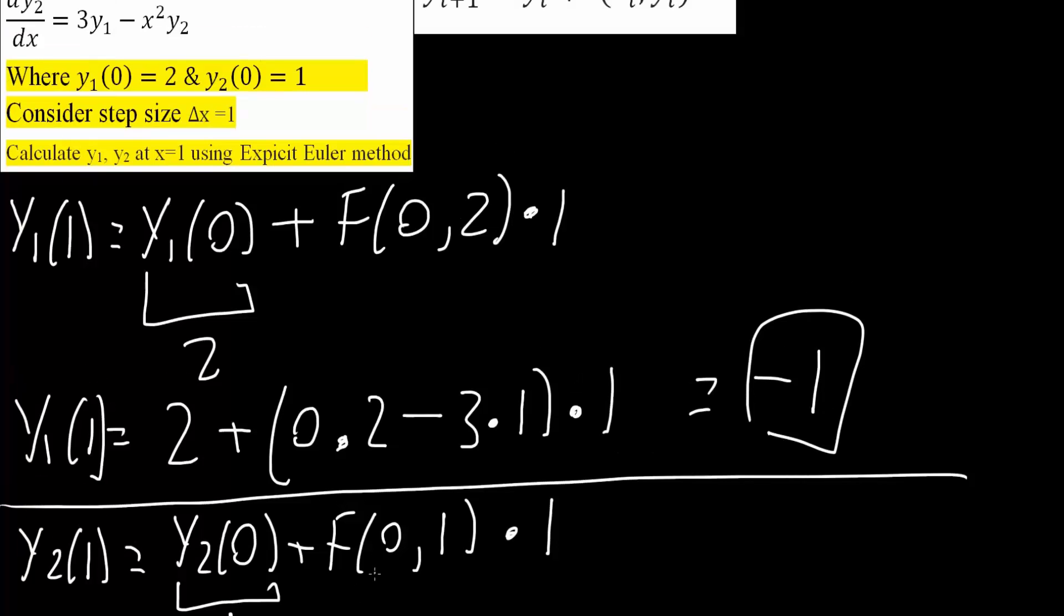So we would get 3 times y1. y1 would be 2, so 3 times 2, minus x squared. x, we said was 0, so 0 squared, times y2, which is 1, so times 1, and multiply this by the step size, which was 1.